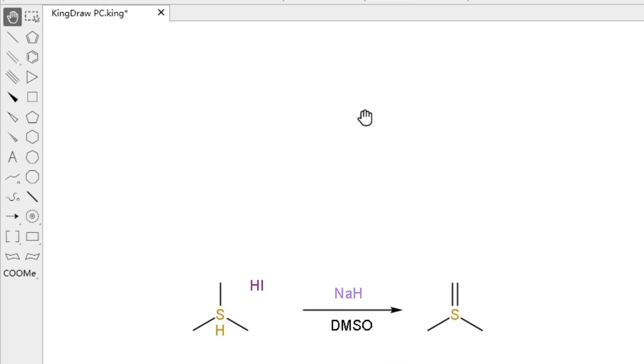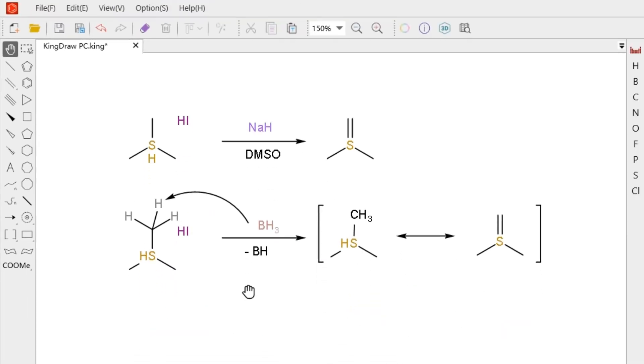The methods of adding charge, radical, and lone pair are all the same, this is very simple. As long as the function is selected, click on the right position, press and hold to adjust the added angle.